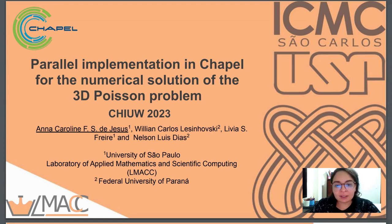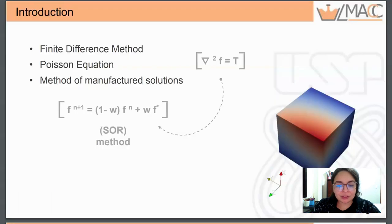I'm excited to work with Chapel to develop a specific code in fluid dynamics to simulate the atmospheric boundary layer in Amazon Forest. So the Poisson Equation is part of developing this code. In this presentation, I'm going to talk about the results obtained from the parallel implementation with Chapel for the numerical solution of the 3D Poisson problem.